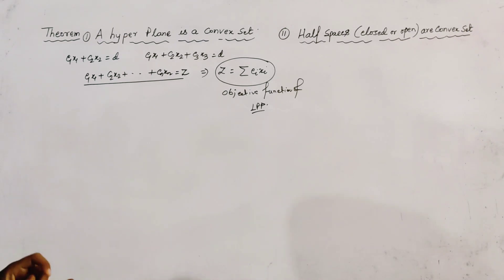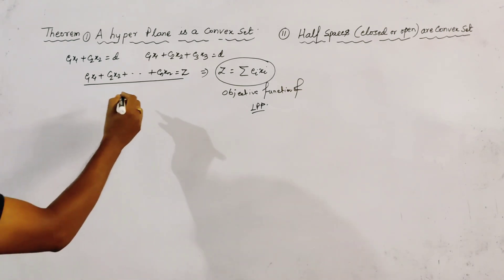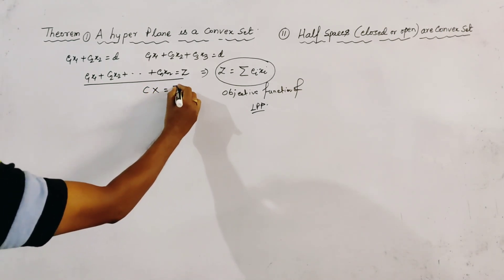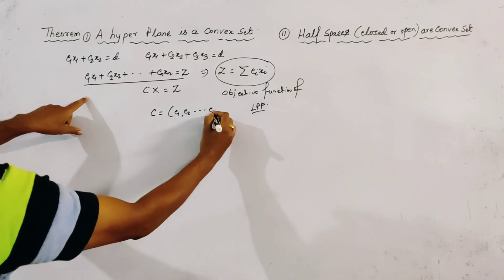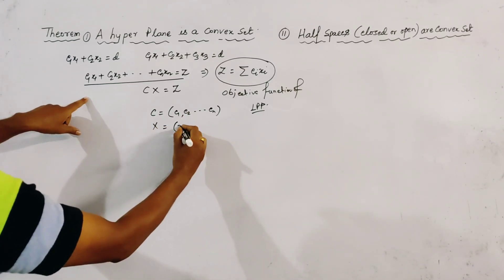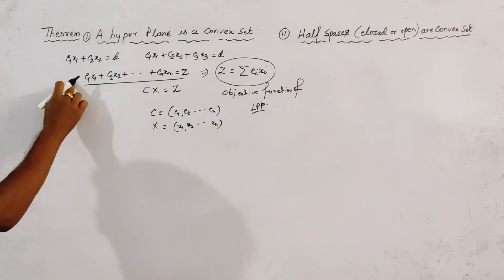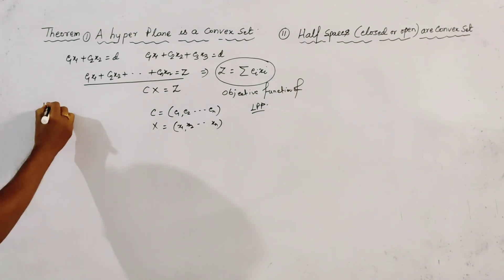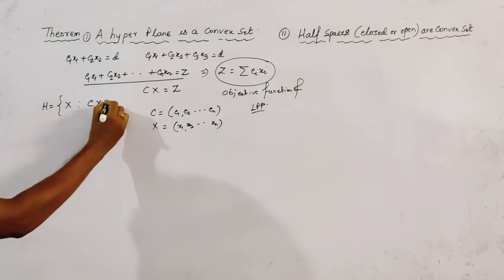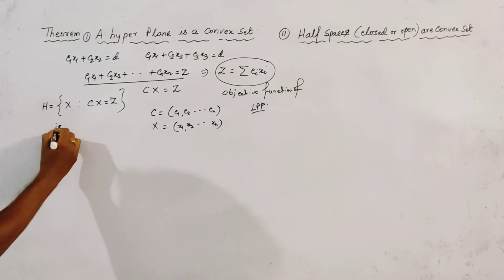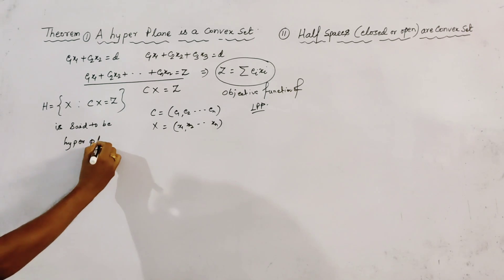In set notation, if we write cx = z, where c is a vector (c1, c2, ..., cn) and x is also a vector (x1, x2, ..., xn), then the hyperplane is written as the set: H = {x | cx = z}, and this is said to be a hyperplane.